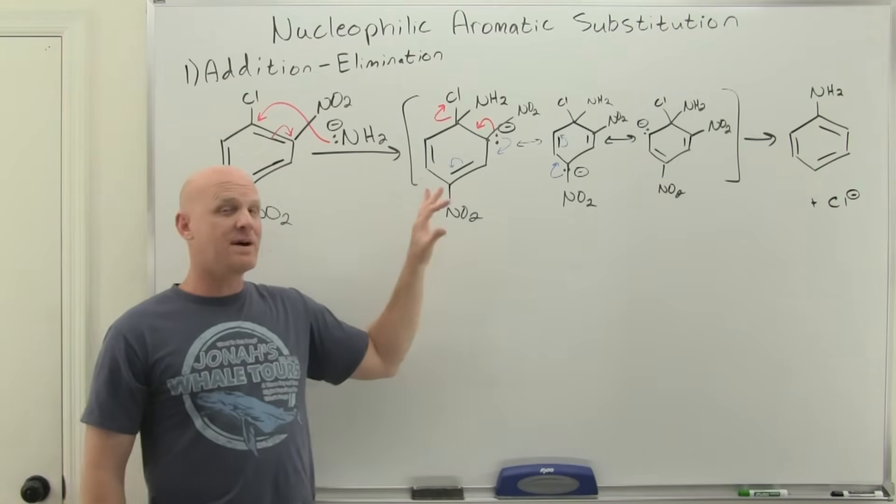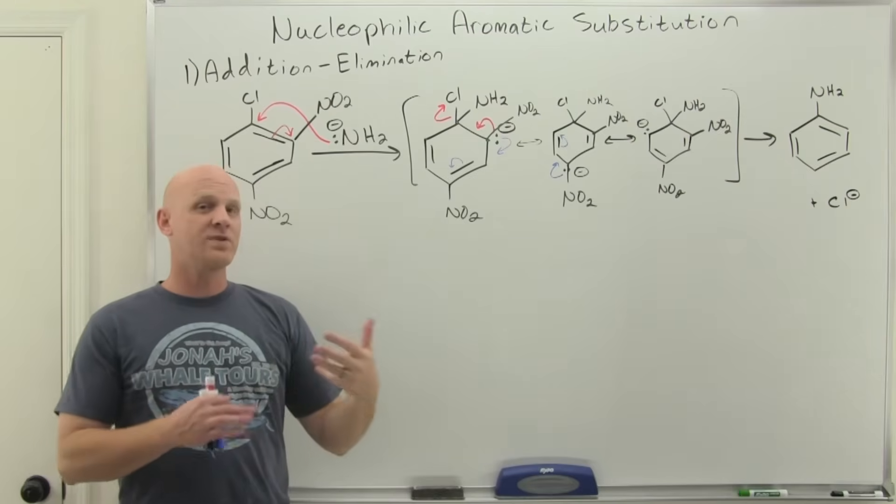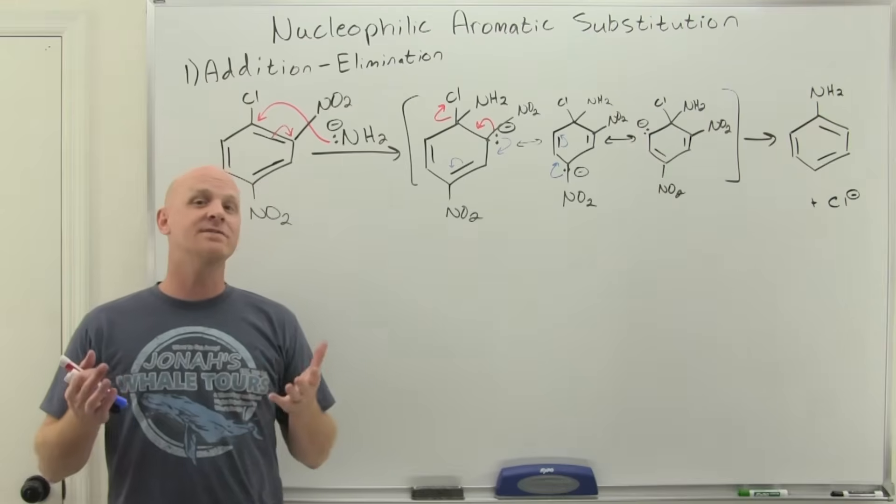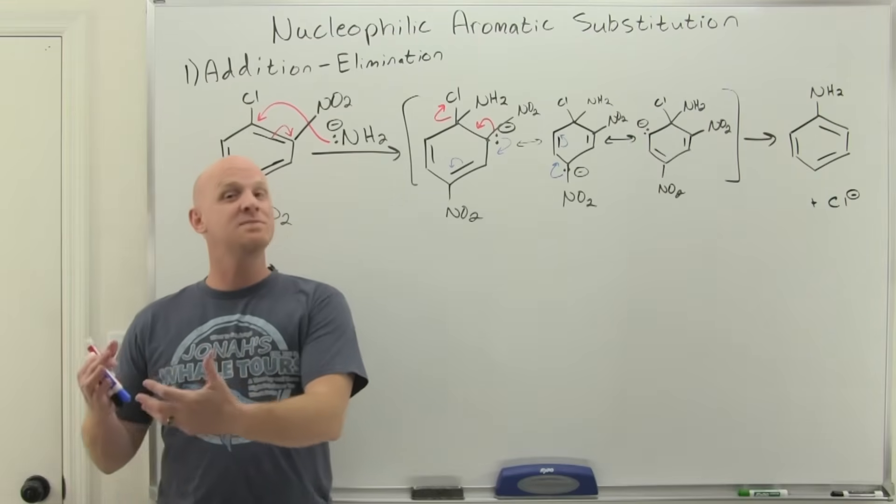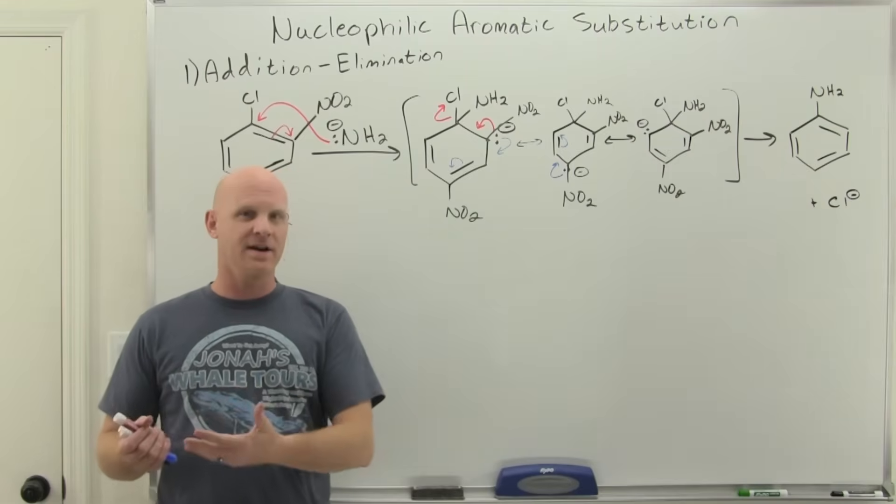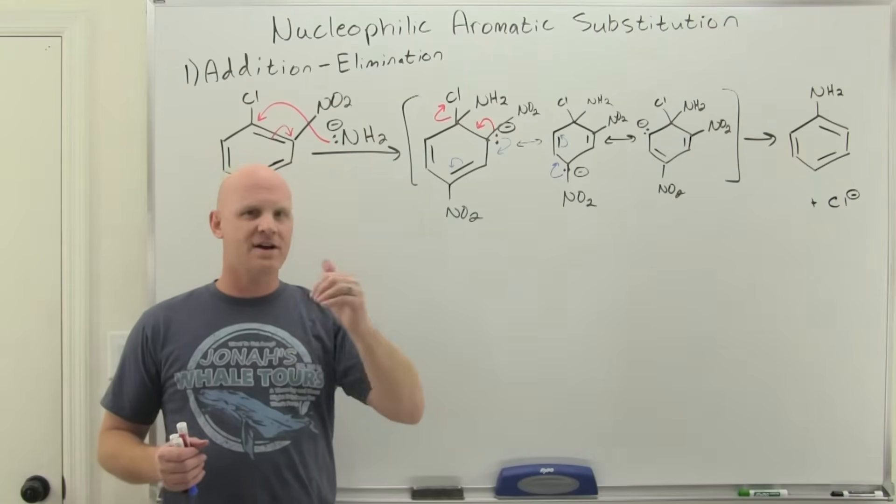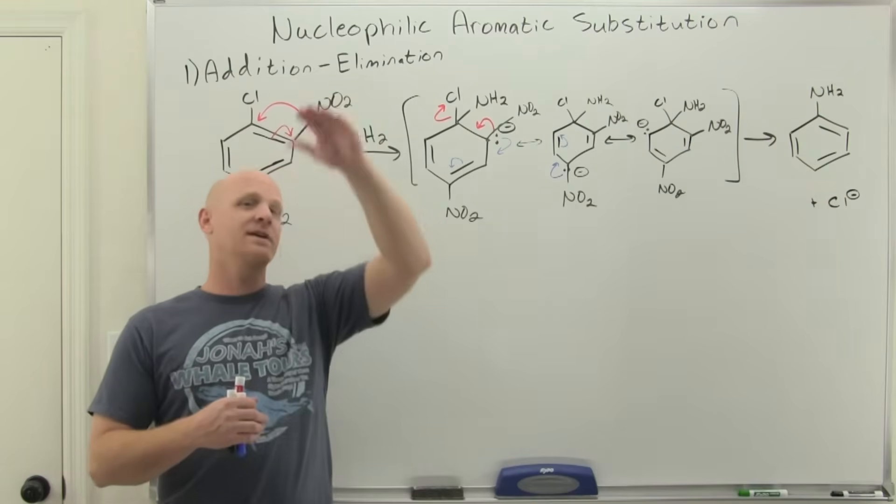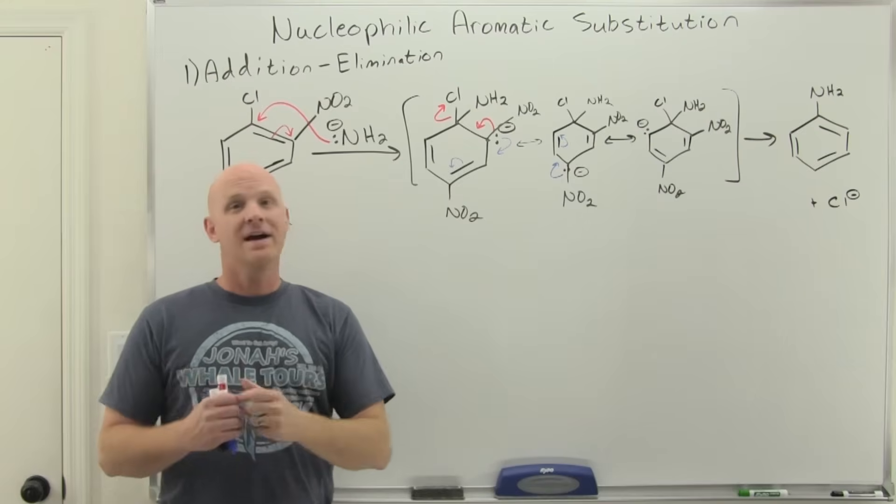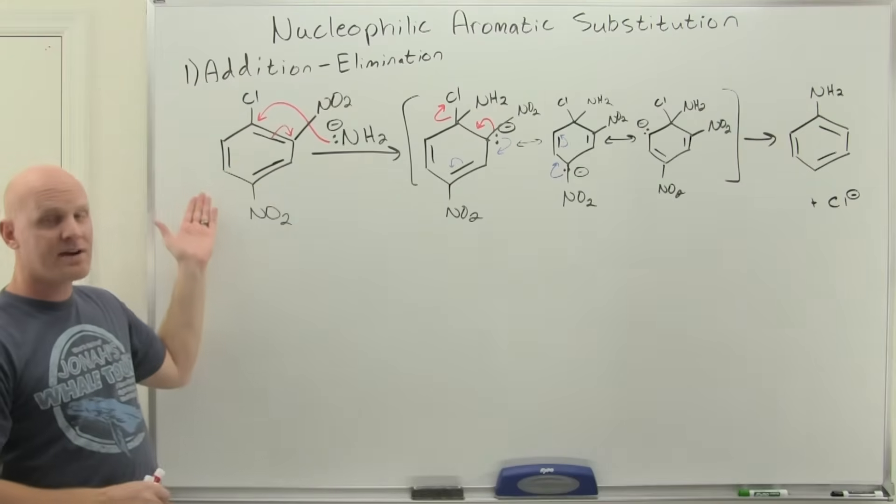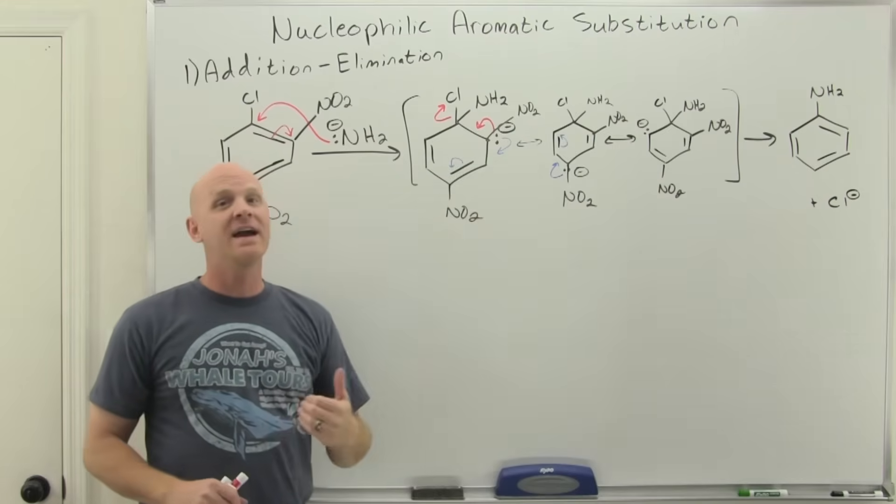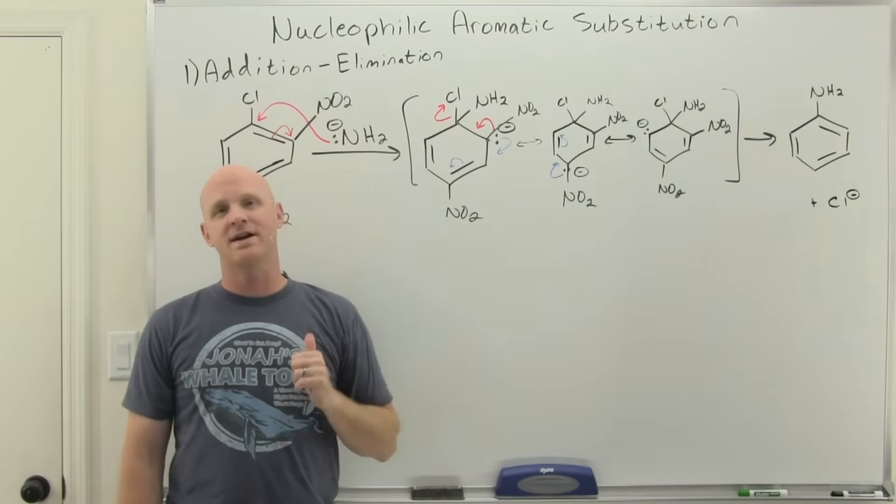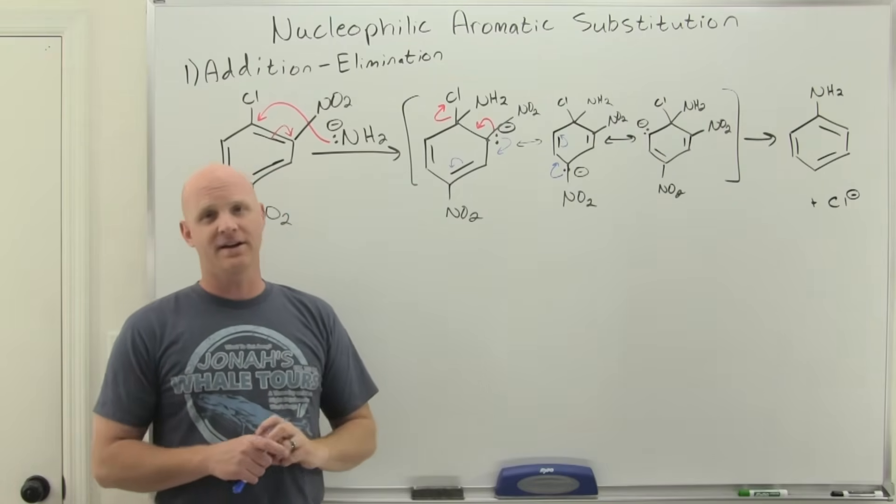If you recall, we talked about these electron donating groups and withdrawing groups as being classified as activating and deactivating. But we discussed that in the context of the EAS reactions. We found out that for EAS specifically, it was the donating groups that were activating, had a lower activation energy and went faster than plain old benzene. And it was with withdrawing groups that they were deactivating, had a higher activation energy than plain old benzene and went slower. Well, it's the exact opposite now because now benzene is the electrophile, not the nucleophile. Now our intermediate has a negative charge, not a positive charge. So now for NAS, it's the withdrawing groups that are activating and the donating groups that would be deactivating instead.